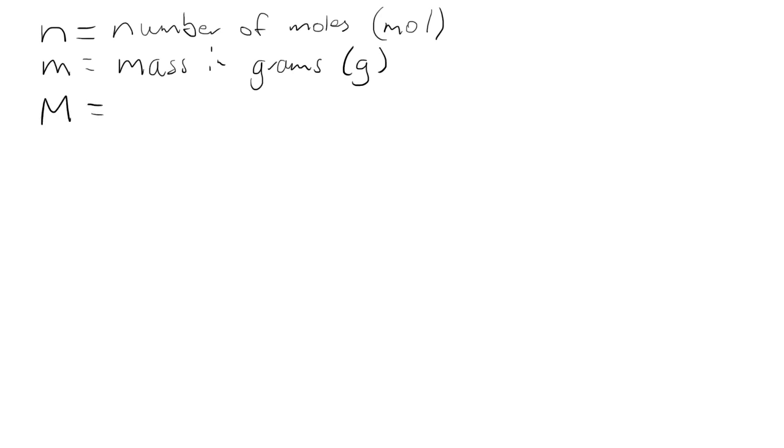And then finally we have the molar mass which we give a capital M. So a small m for mass and capital M for the molar mass, and the unit we're going to give that is grams per mole, that's g mol to the negative one.